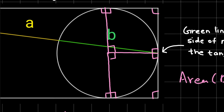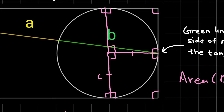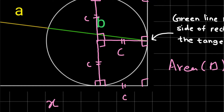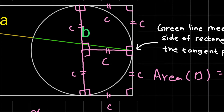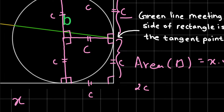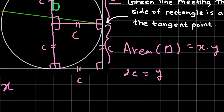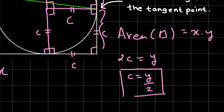Let the radius of the circle be C. Each quadrilateral has all four angles equal to 90 degrees and two adjacent sides equal to the radius C, so both quadrilaterals are squares. Therefore every side of each square equals C. The breadth of the rectangle is formed by two such lengths, giving 2C = Y, so the radius C equals Y over 2.